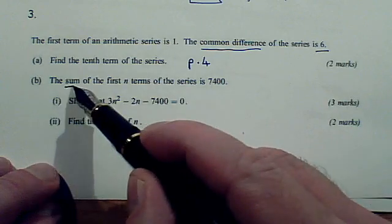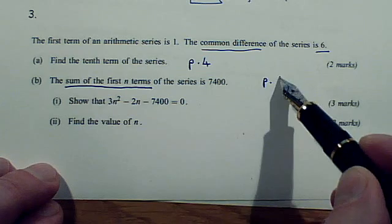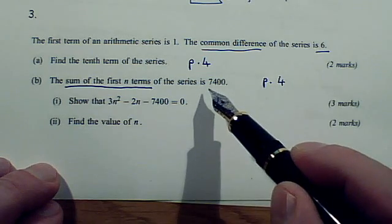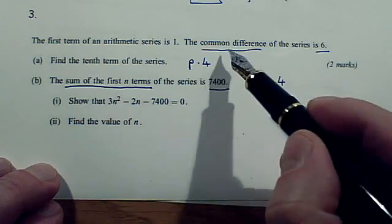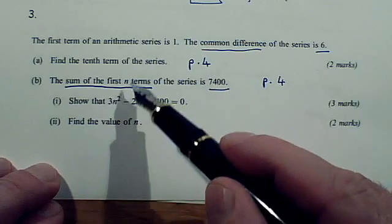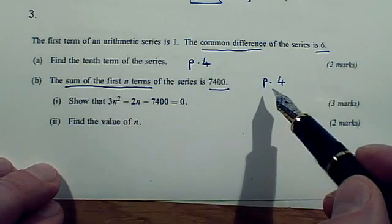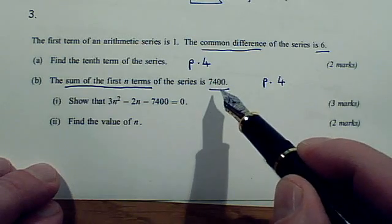Then we've got the sum of the first n terms. That's going to be a different formula from page 4, and we know the answer to that is 7,400. So what we've got to do is put the things we know—the first term and the common difference, plus n that we don't know—into that formula on page 4, so the answer's got to equal 7,400.